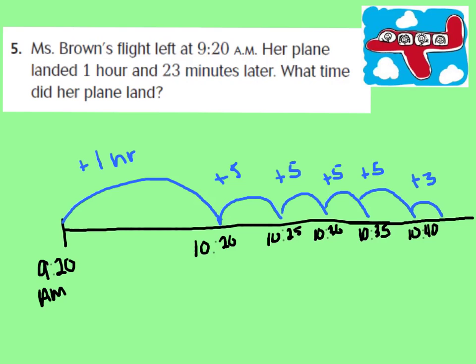Then I added increments of 5 minutes — I'm trying to get to 23 minutes after my 1-hour jump. 5 minutes would be 10:25, another 5 minutes is 10:30, another 5 minutes would be 10:35, and another 5 minutes would be 10:40. So far I've gone 1 hour, 1 hour and 5, 1 hour and 10, 1 hour and 15, 1 hour and 20 minutes.